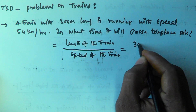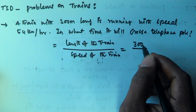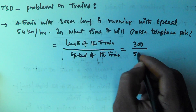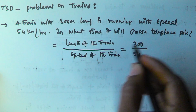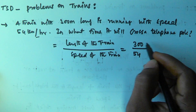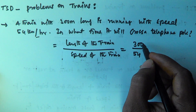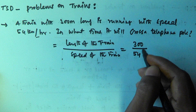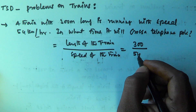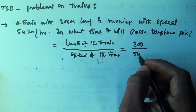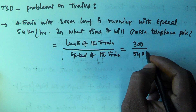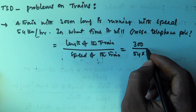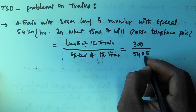In this case, the length of the train is 300 meters divided by the speed of the train, which is 54 km/h. Since the length is in meters, we need to convert 54 km/h to meters per second by multiplying by 5/18.